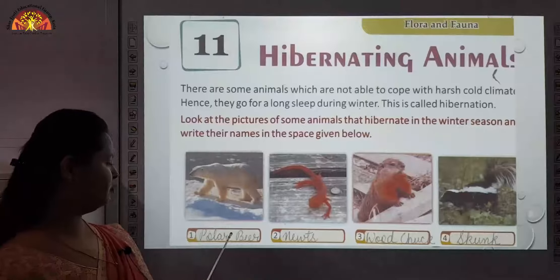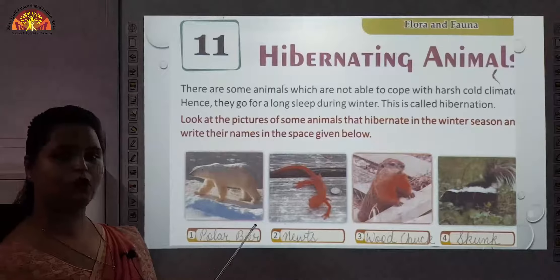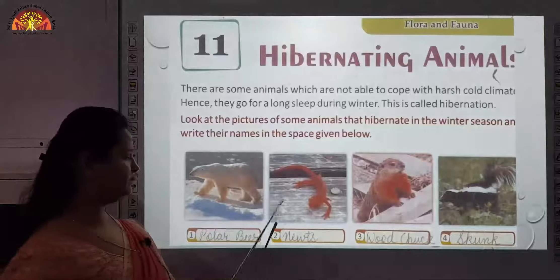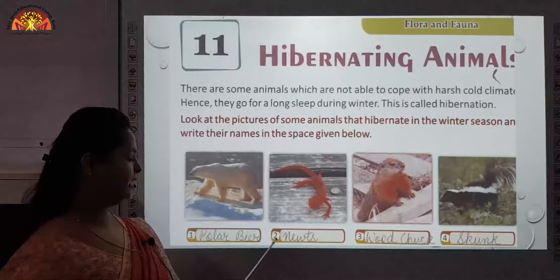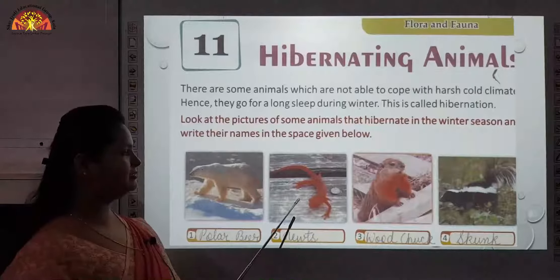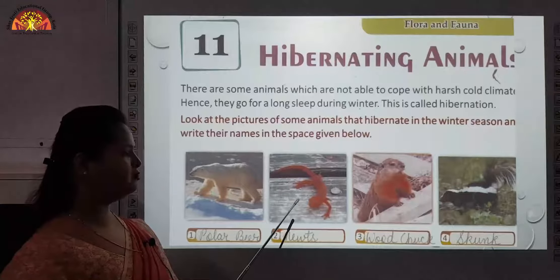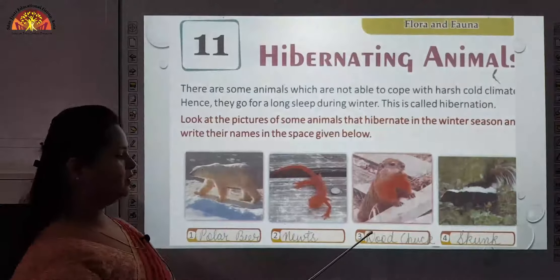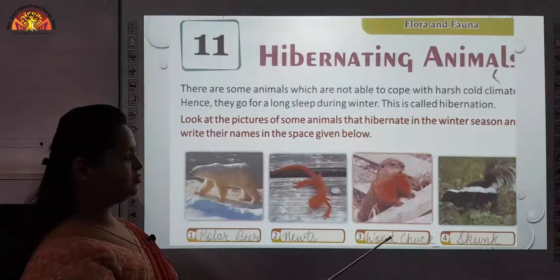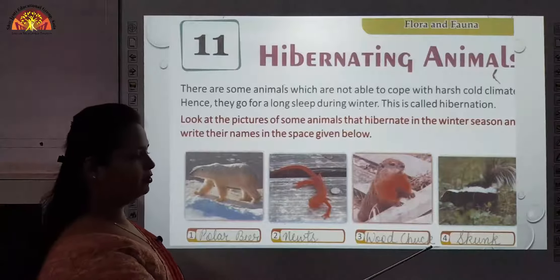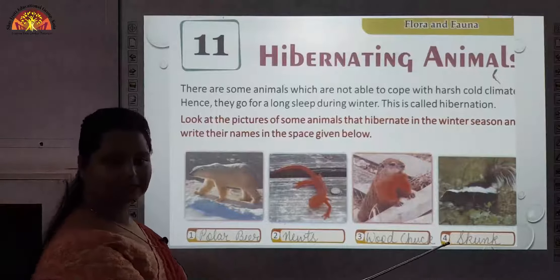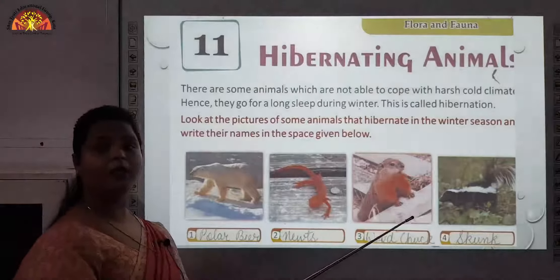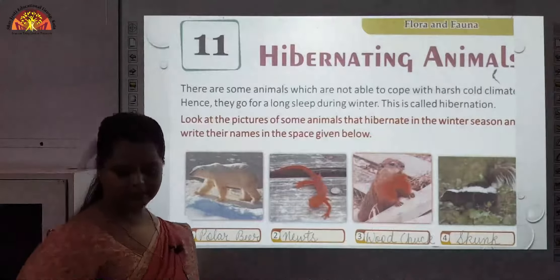The first one is polar bear — as you all know, they are generally found in the polar region. Second is newts; newts is a combination of a lizard and a frog. Third one is woodchuck, fourth is skunk — they are generally found in very cold regions.